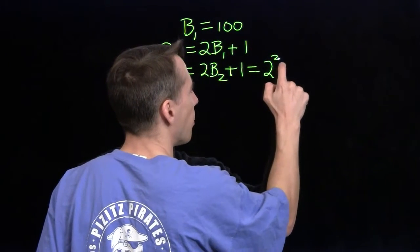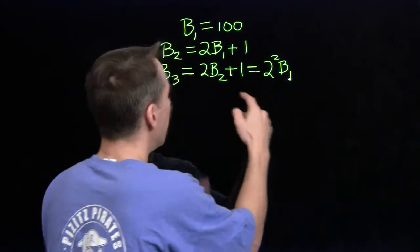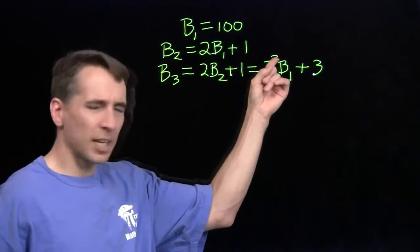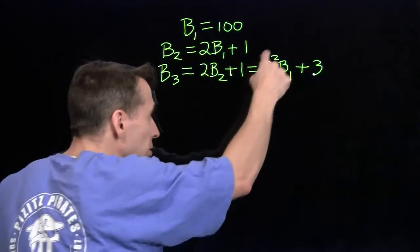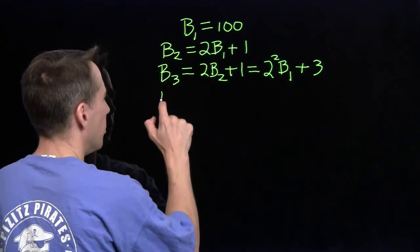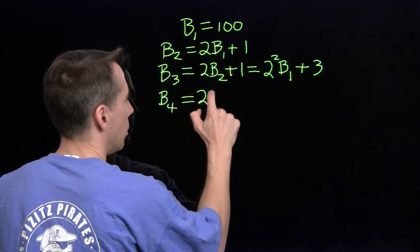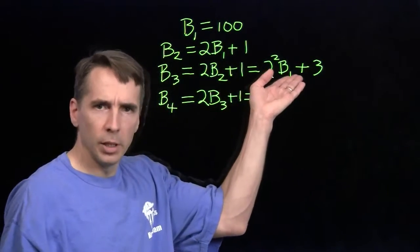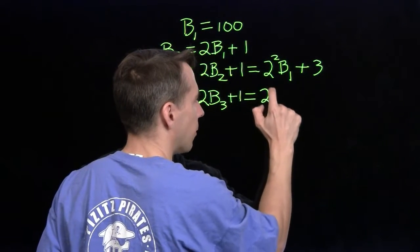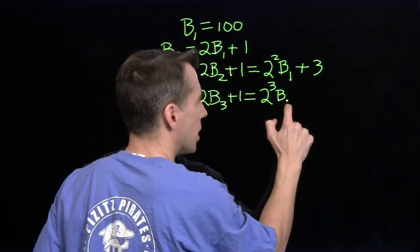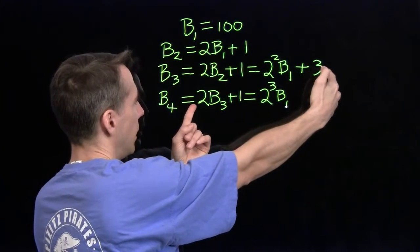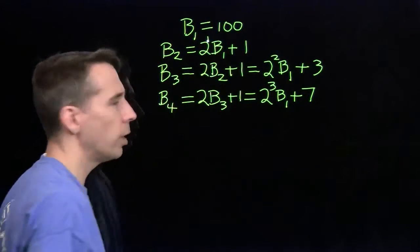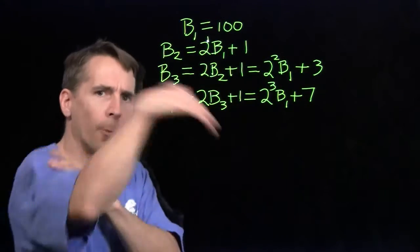So b-three equals two-squared times b-one, plus the one times two gives two, and then I add one more to get three. Moving on to b-four, which collects double b-three plus one: multiplying two-squared by two gives two-cubed, and I already see that pattern emerging in the exponents. Doubling the three gives six, and adding one gives seven. I can see the pattern more clearly now, but these coefficients out front are still a mystery, so I'll go one more step.